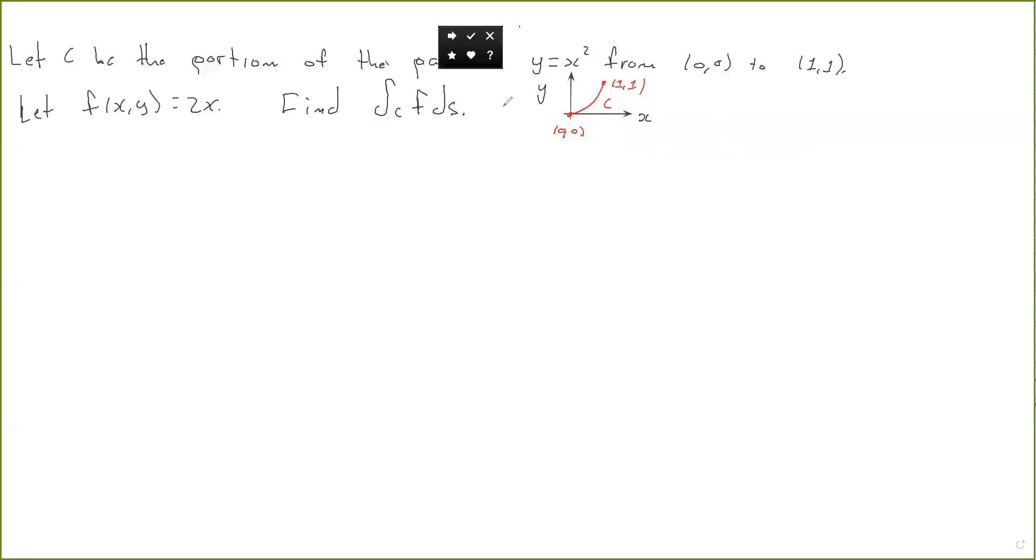Okay, so we want to do this line integral. Let C be the portion of the parabola y equals x squared that goes from (0,0) to (1,1). Let f(x,y) equal to x. We want to find the line integral of f over this curve.